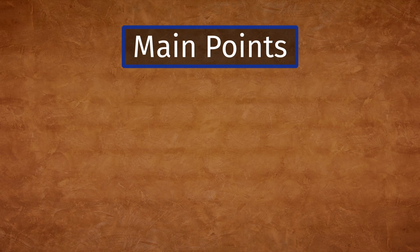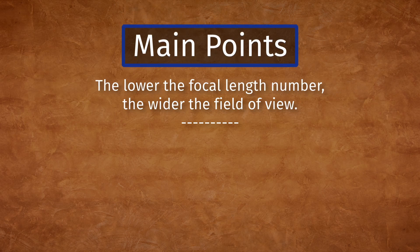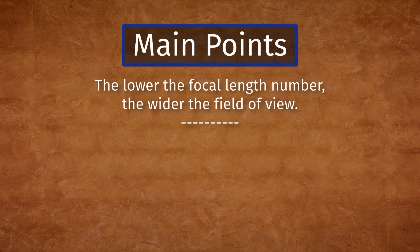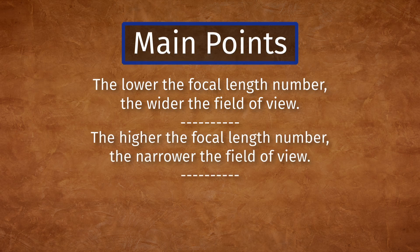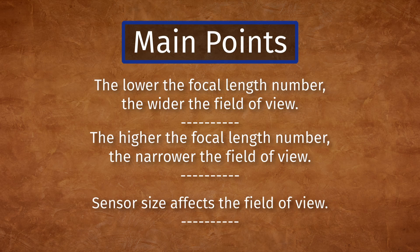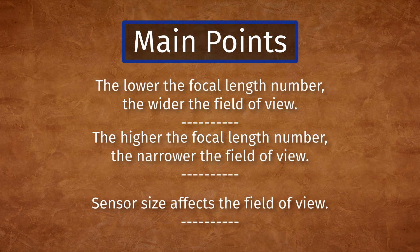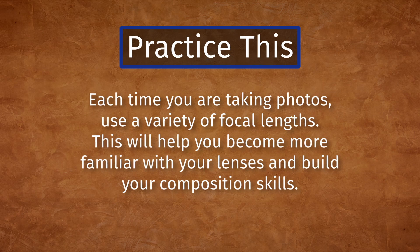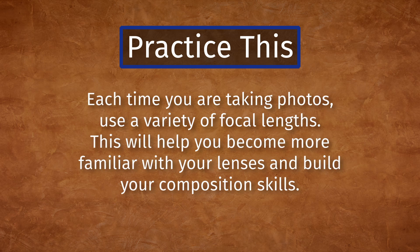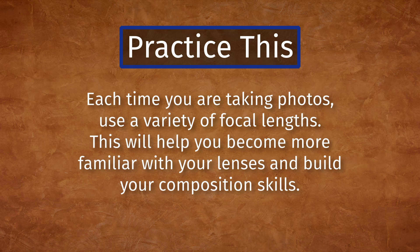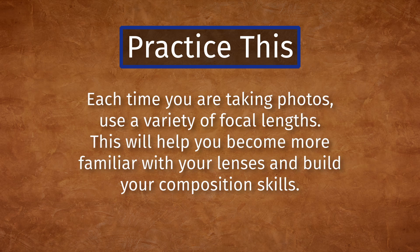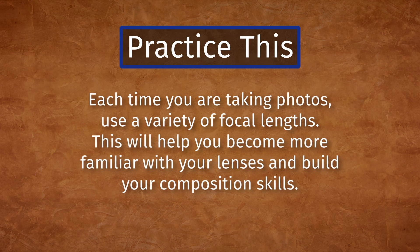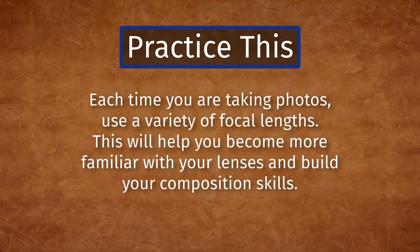The main points for this lesson: the lower the focal length number, the wider the field of view; the higher the focal length number, the narrower the field of view. Sensor size affects the field of view. Practice this to improve your photography — each time you're taking photos, use a variety of focal lengths. This will help you become more familiar with your lenses and build your composition skills.